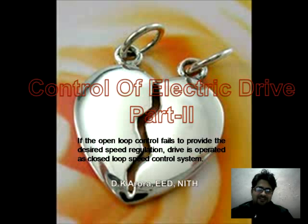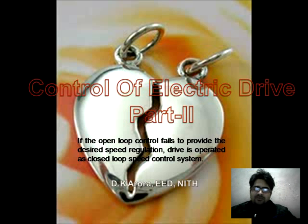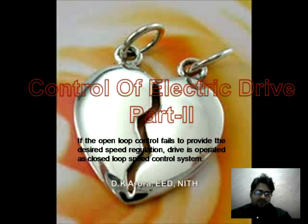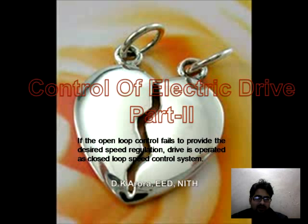Welcome back to Part 2 of the lecture on control of electric drives. In the first lecture we saw that if open loop control fails to provide the desired speed regulation of the electric drive system, it can be operated in a closed loop control system. Feedback becomes unavoidable due to requirements such as production protection, immediate speed response, or improvement in steady state accuracy.